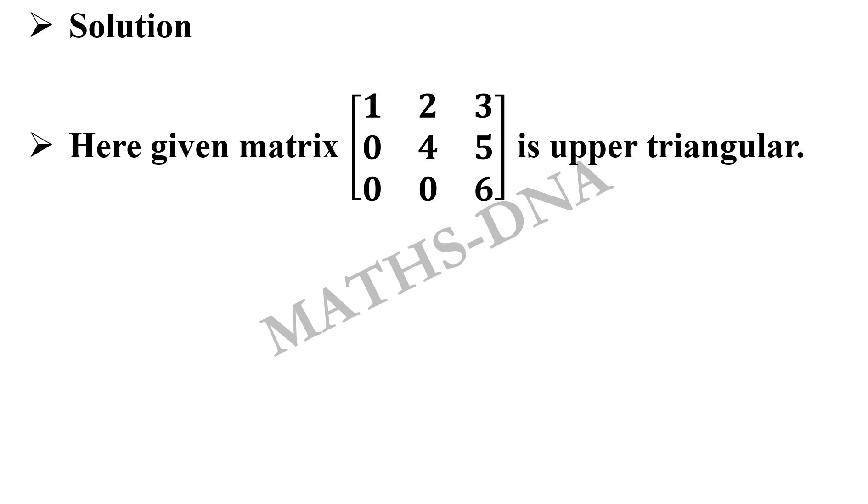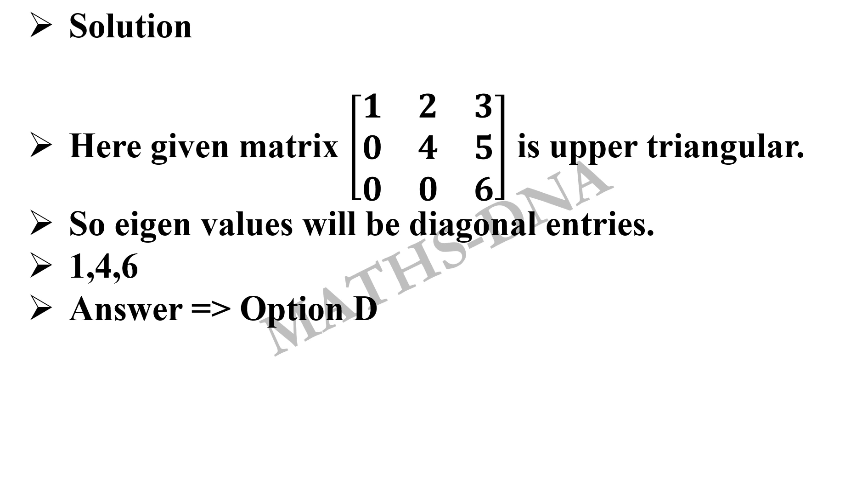This was a very simple question. The given matrix is an upper triangular matrix, and we know that the eigenvalues of an upper triangular matrix are the diagonal entries. Similarly, for a lower triangular matrix, the diagonal entries are the eigenvalues. So here they are 1, 4, and 6, which is option D.